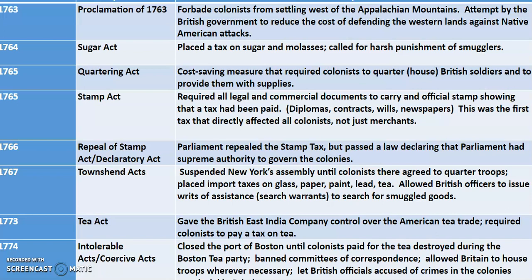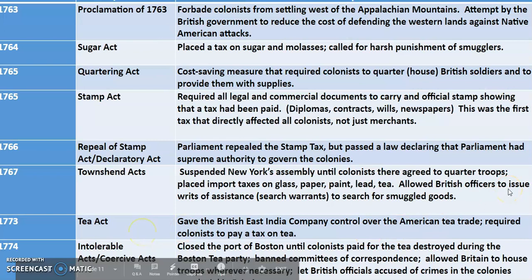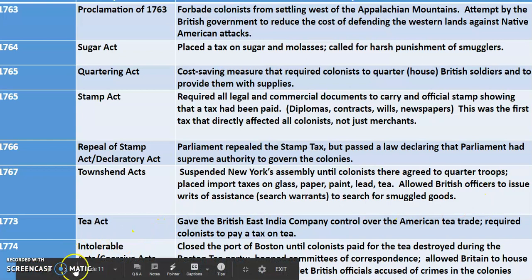You've probably heard of the Boston Tea Party — and if you haven't, that will be covered in the upcoming lesson. Finally, the Intolerable Acts, also called the Coercive Acts: British troops came into Boston and placed it under martial law in response to the Boston Tea Party. They banned committees of correspondence — people writing letters to coordinate resistance — and forced the Quartering Act on Bostonians and essentially everyone in Massachusetts.